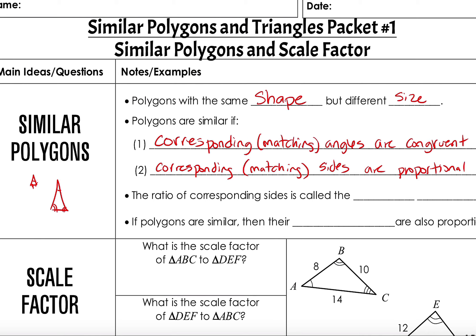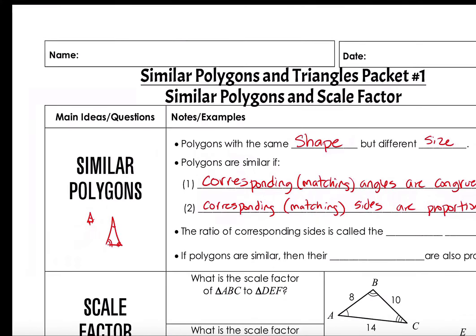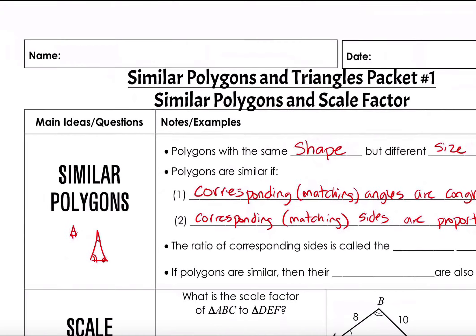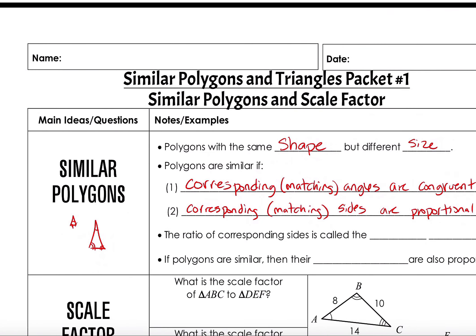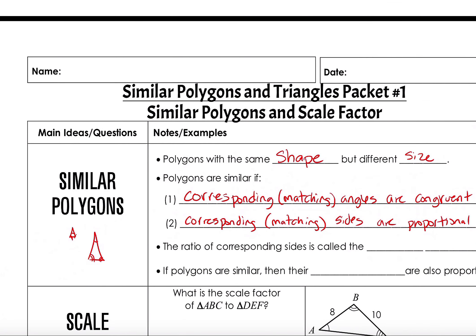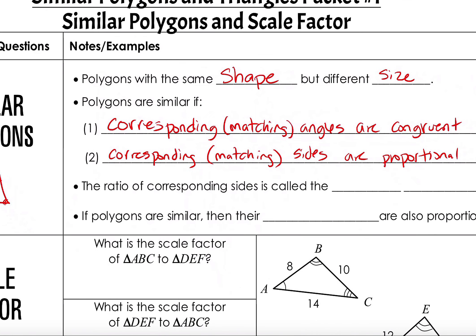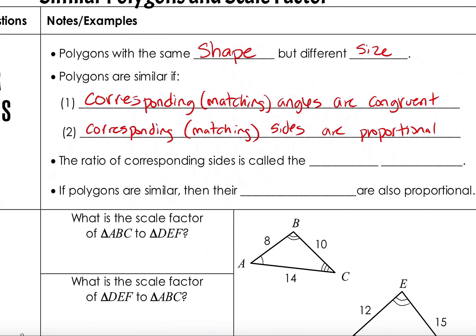So what does proportional mean? It just means it looks the same when it's big or small. Kind of like on your phone when you zoom in and out — everything looks the same, it just changes size. That's called proportional; it keeps the same ratio of sizes. If it didn't stay proportional, everything would look deformed. Those are the two facts: matching angles are congruent and matching sides are proportional.